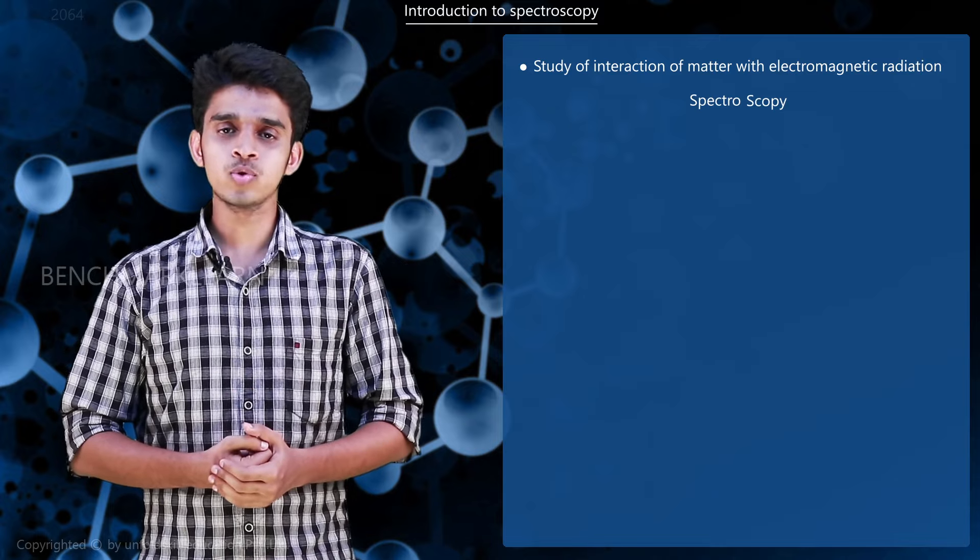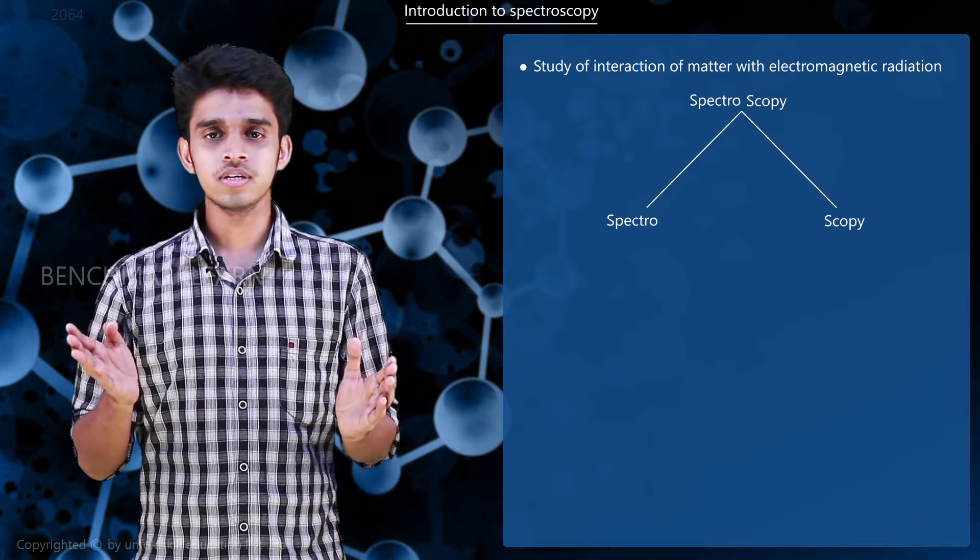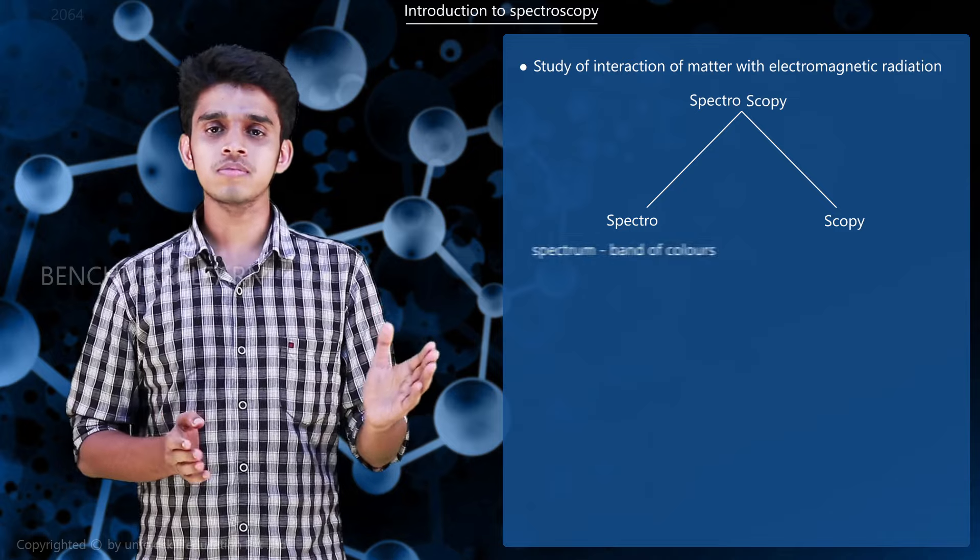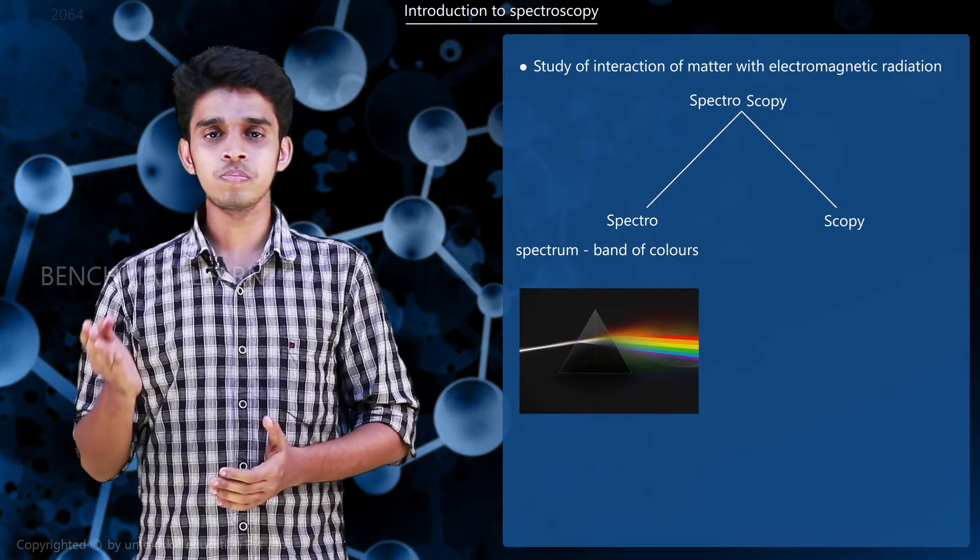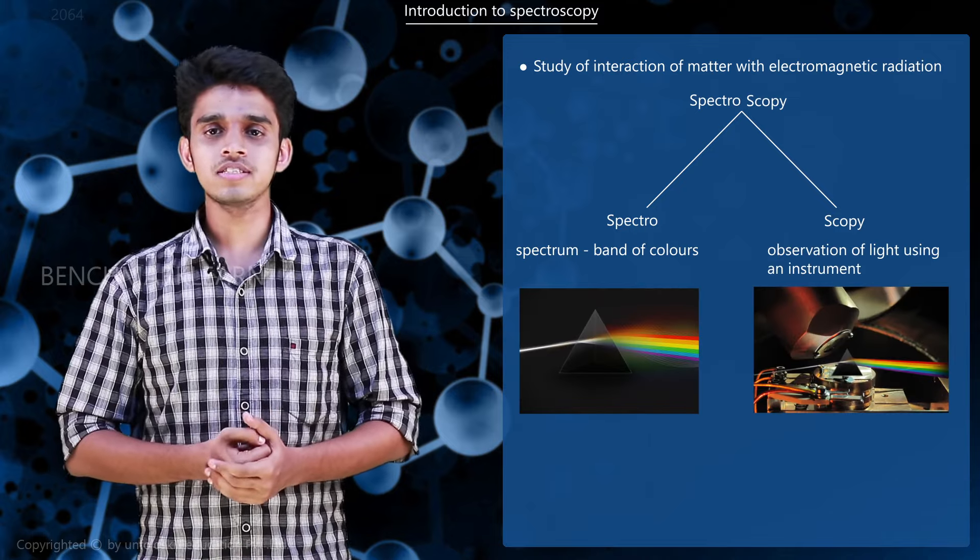It is derived from two words: spectro and scopy. Spectro means spectrum or the band of colors, and scopy means the method of observing light using an instrument.